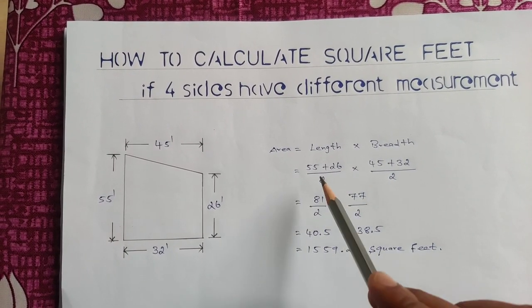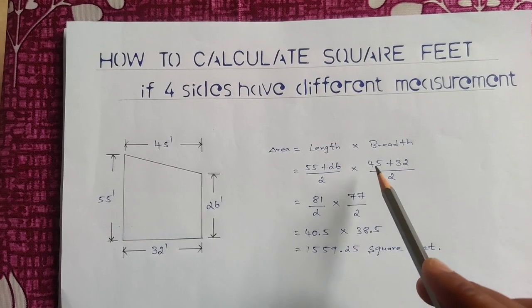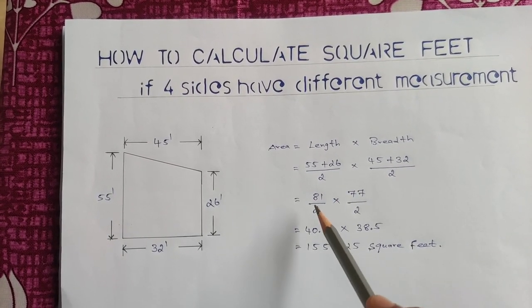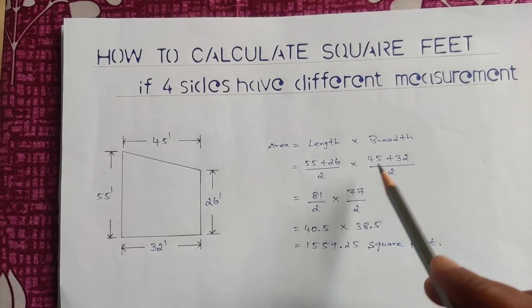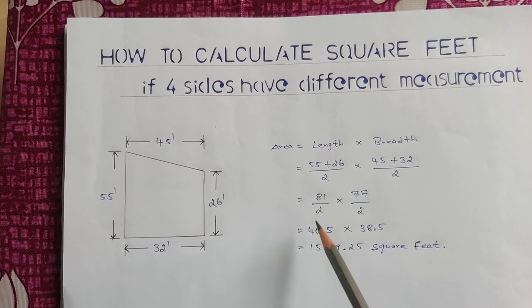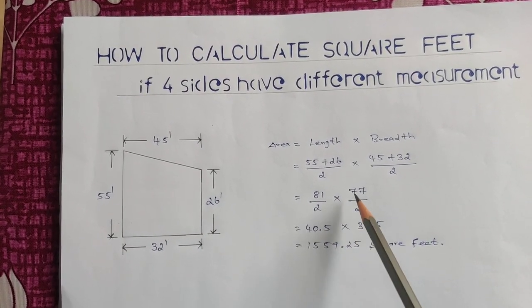So 55 plus 26 equals 81 divided by 2. And 45 plus 31 equals 77 divided by 2.